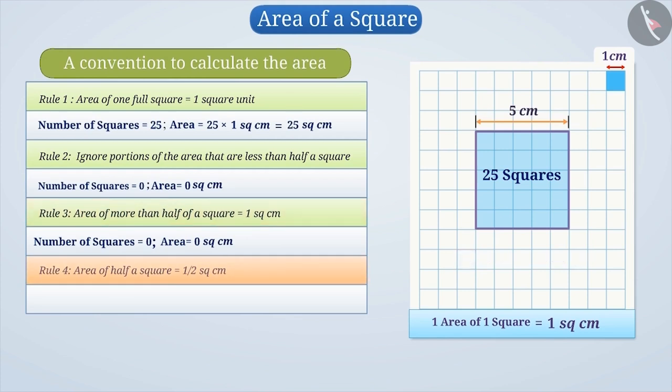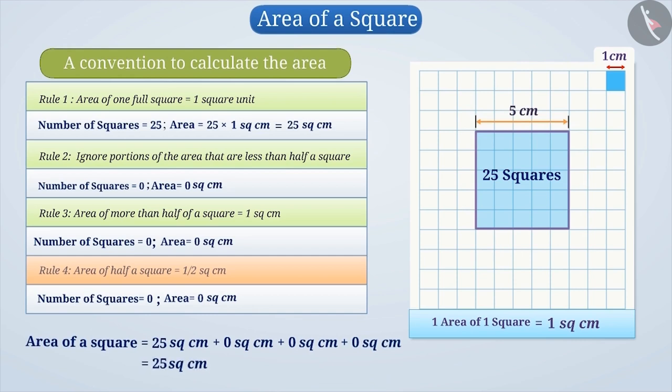Rule 4: If exactly half the square is counted, take its area as 1 cm². We don't have half squares here. With this, we conclude the total area of the square to be 25 cm².